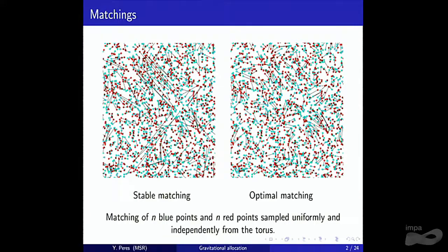Here is another picture, done by Ander Holroyd, comparing about 300 blues and 300 reds. On the right is the optimal matching — minimal average length. On the left is the greedy matching, also known as the stable matching: take the blue and red that are closest, match them, then the next pair, and so on. This coincides with the Gale-Shapley stable matching, where each blue orders reds by distance and each red orders blues by distance.